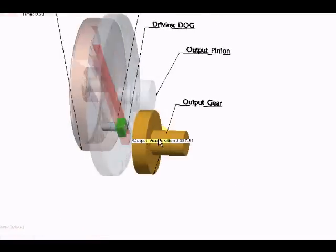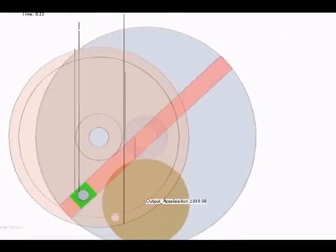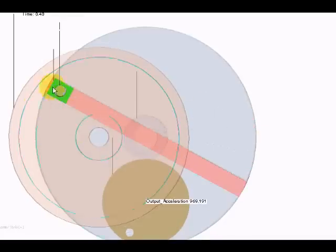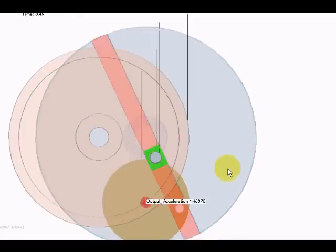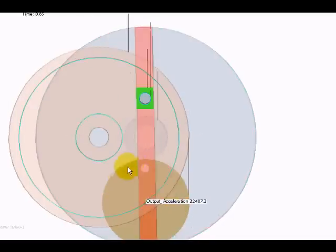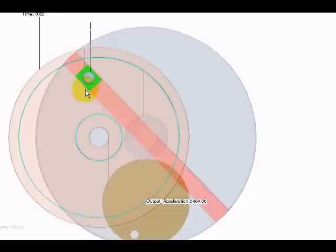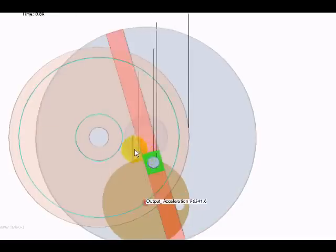The direction of the motion, if we reduce the speed, as you see it is clockwise from here and the output gear is rotating anti-clockwise. You can see the dog sliding from inside the slot. There it goes.